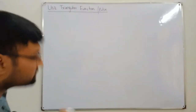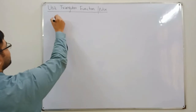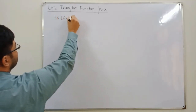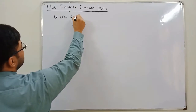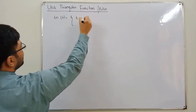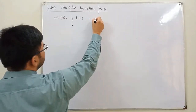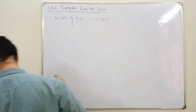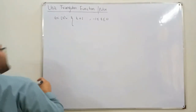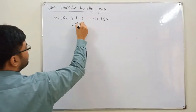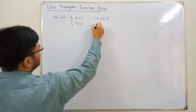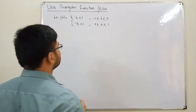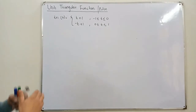The unit triangular signal is represented as tri(t). It is defined as: tri(t) = t + 1 when time is between negative 1 and 0 (inclusive), and tri(t) = -t + 1 when time is between 0 and positive 1 (inclusive).